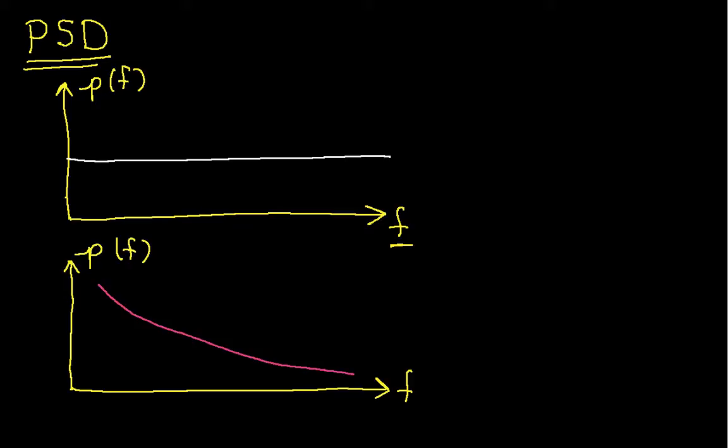For example, if I look at a particular frequency called F0, the value of the power spectral density at F0 tells me how much power the noise has at this frequency. And more specifically, if I take this value and multiply it by 1 Hertz, that tells me how much power is in a band of width 1 Hertz centered around this frequency F0.